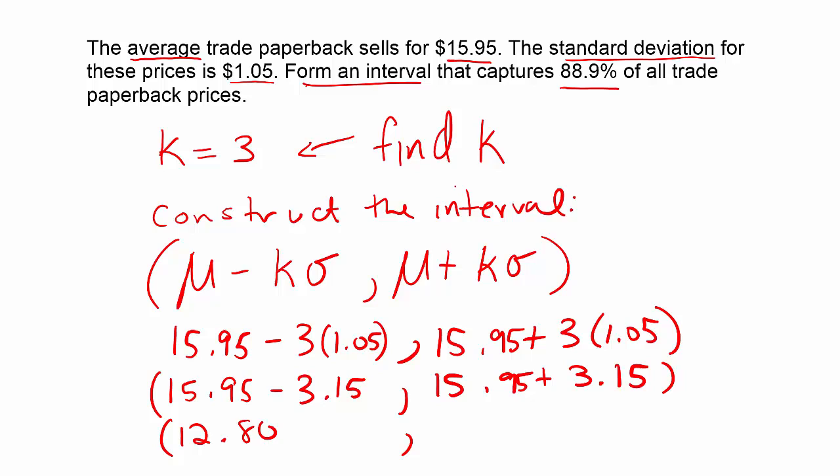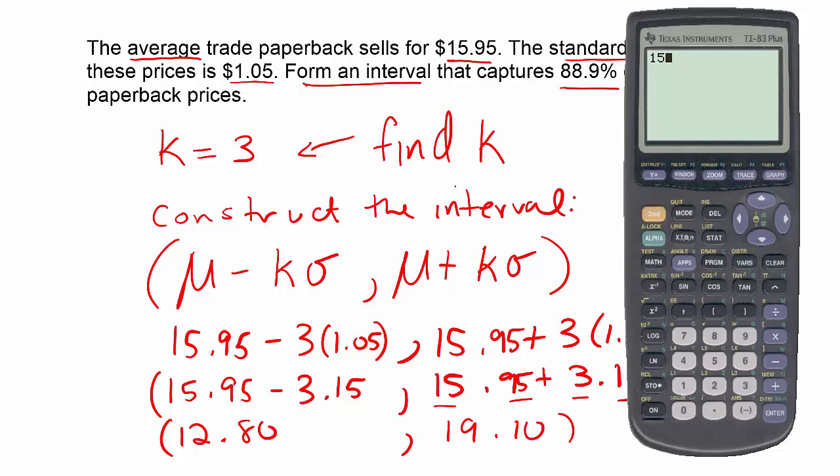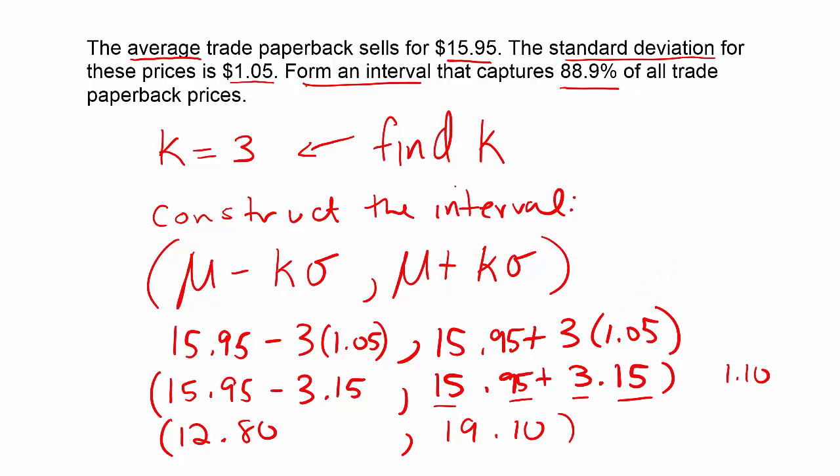And then likewise, if I add $0.15 to $0.95, I'll get $1.10. And if I add $3 to $15, I get $18. So $18 and $1.10 is $19.10. Again, you could have simply done that with your calculator. You could have simply said $15.95 minus $3.15 and then the same calculation, this time changing the negative to a plus, and got $19.10. So what we're saying here is that the interval from $12.80 to $19.10 captures at least 88.9% of all trade paperback prices.